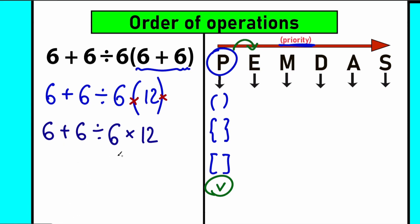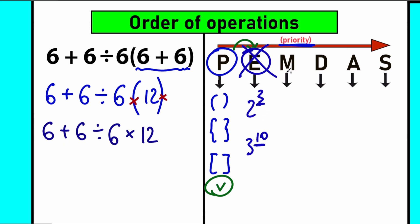After solving the parentheses we have 6 plus 6 divided by 6, and there's a multiplication sign here because when we don't have a sign between terms, in 99% of cases that means multiplication — so times 12. We complete the parentheses part. The next step after parentheses is exponents — powers like 2 to the power 3. Let's scan for any powers. To be honest, I don't see any, so we can cancel this step.